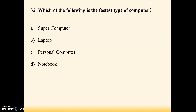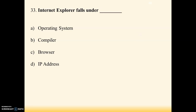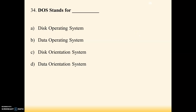Next question: which of the following is the fastest type of computer? Options are supercomputer, laptop, personal computer, notebook. Option A is correct — supercomputer. Internet Explorer falls under — options are operating system, compiler, browser, IP address. Answer is browser — Internet Explorer is a browser.